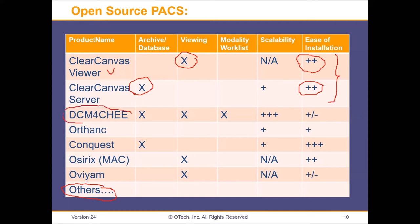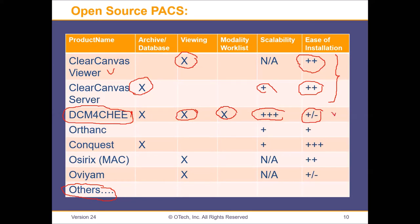DCM4CHEE is a very important open source PACS system. It's an archive and database with a web viewer available and has a modality worklist — a major advantage. It's more scalable than ClearCanvas. Ease of installation is somewhat tricky — it's Linux-based compared to ClearCanvas which is Windows-based. You can use Docker containers for relatively easy installation, but you need more advanced IT skills to install and support it.